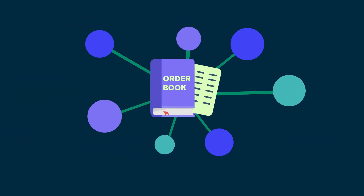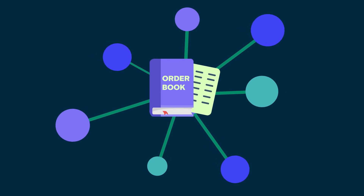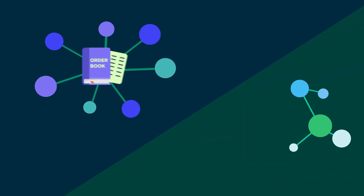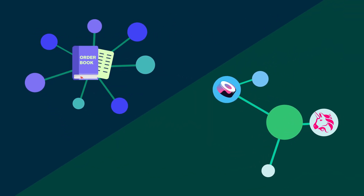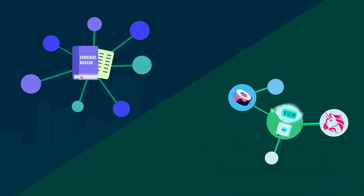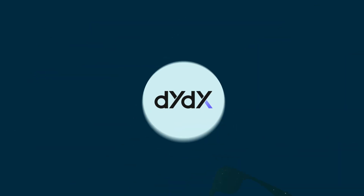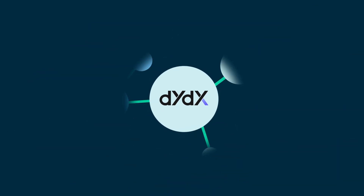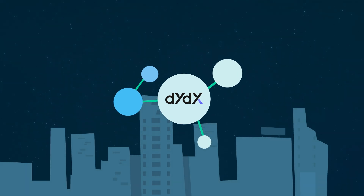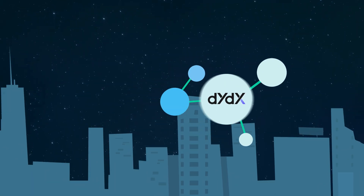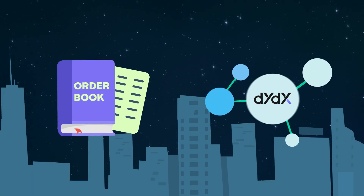Currently, order books are commonly used by centralized exchanges, while most decentralized exchanges like Uniswap use the AMM system. There are, however, decentralized exchanges such as DYDX that use the order book system for trades.